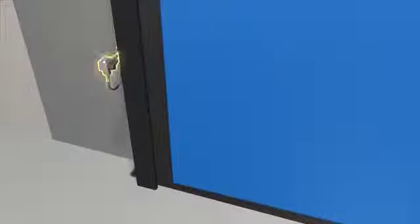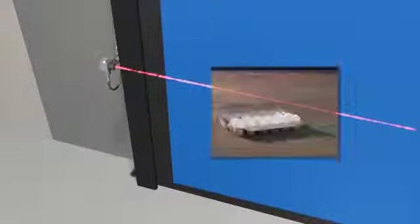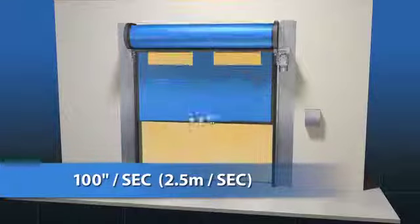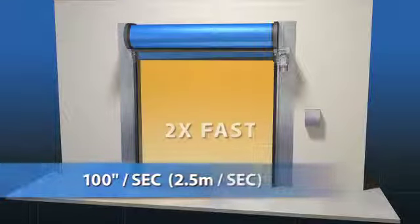With standard multi-point photo eyes and a soft bottom edge, and with peak speeds of up to 100 inches per second, it's twice as fast as most competitive washdown doors. Fact is, FastTrack Clean is the cleanest, fastest, smartest, most reliable, and most productive door available on the market today.